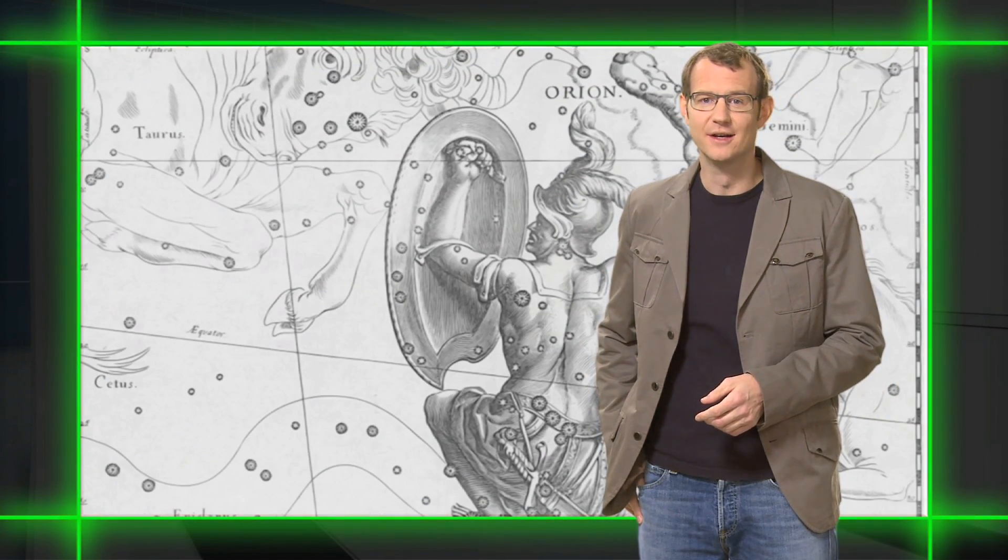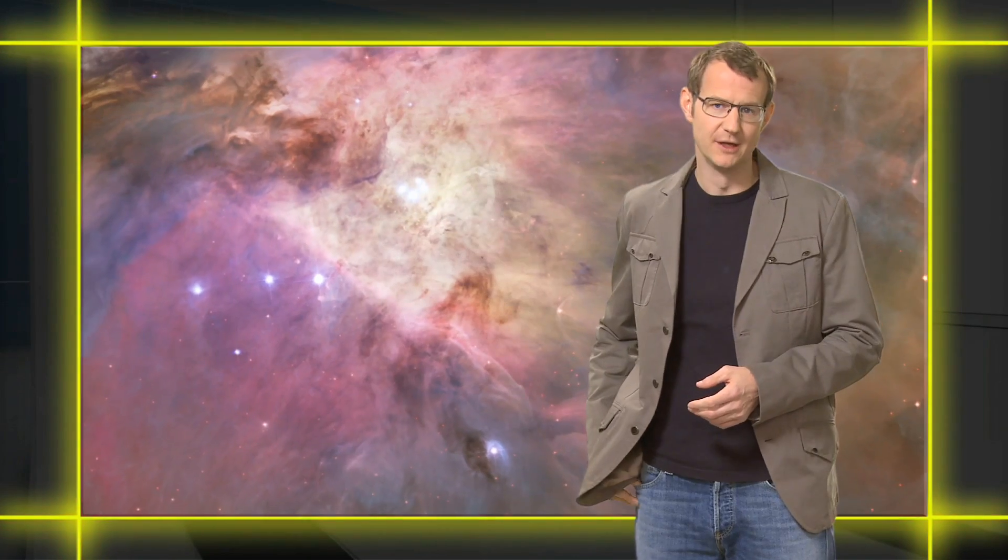In the sword, just under the belt in the constellation of Orion the Hunter, is the majestic Orion Nebula. The Orion Nebula is one of the best known examples of a star-forming nebula, a swirling cloud of gas and dust where stars begin their journey of life.